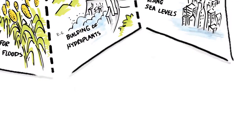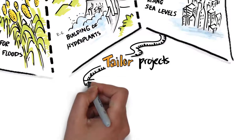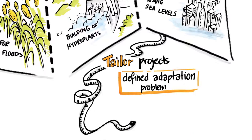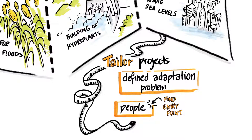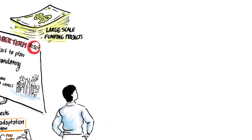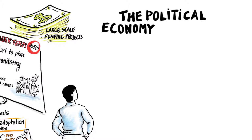When approaching policymakers and investors, it is vital to bring tailored adaptation projects to target a defined problem that is relevant to wider national development goals. The next step is to find the right people in the political system who have the power to make it happen. This means that when planning for adaptation, you also need to understand the wider political economy.